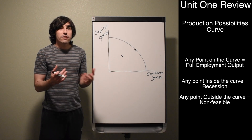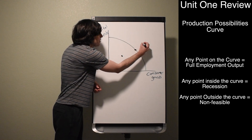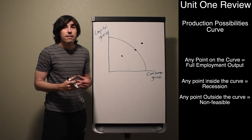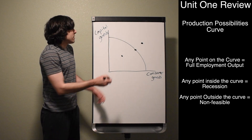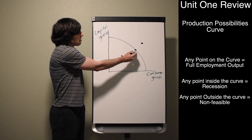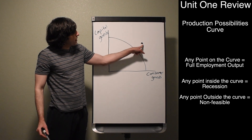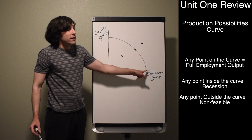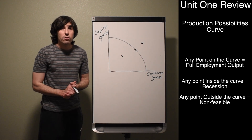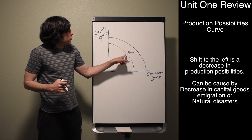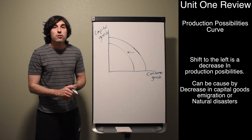Any point outside the curve is going to be something that is not feasible — it's not possible right now. You can make, say, 20 capital goods and 10 consumer goods, but we can't currently make 30 capital goods and 20 consumer goods; we just don't have enough resources or workers. As the curve shifts to the left, there is a reduction in our country's production possibility.